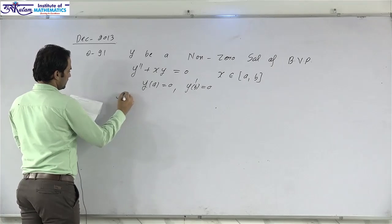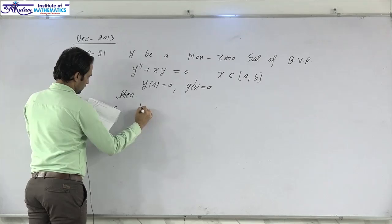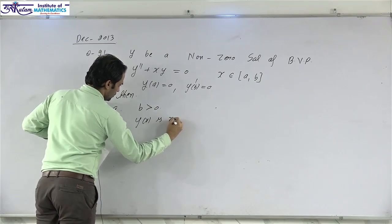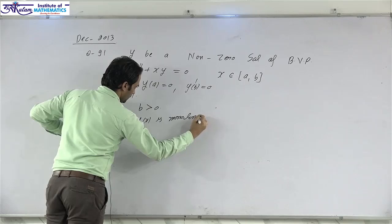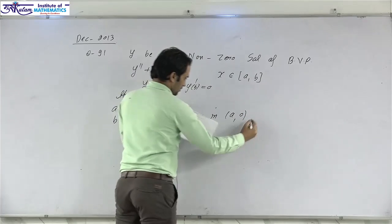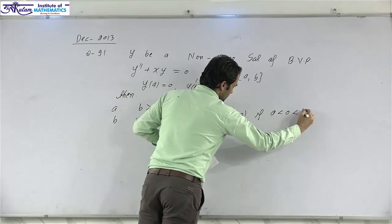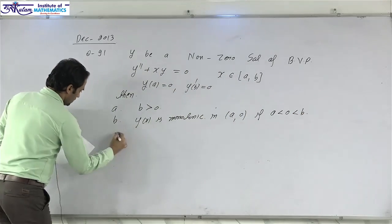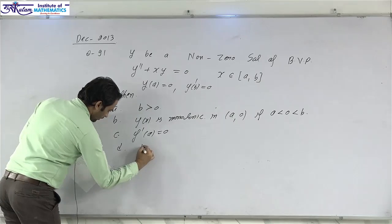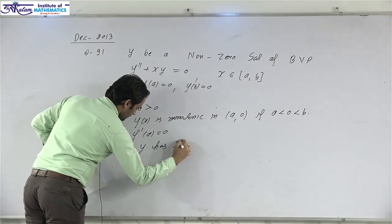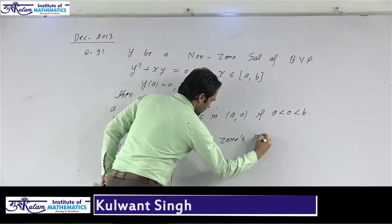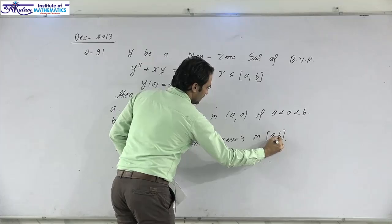The four options are: (a) b must be greater than 0; (b) y(x) is monotonic on [a, 0] if a is strictly less than 0; (c) y'(a) = 0; and (d) y has infinitely many zeros in the closed interval [a, b]. These are the four options.